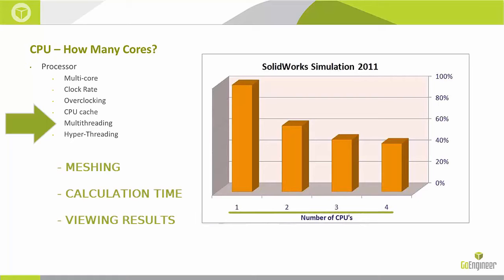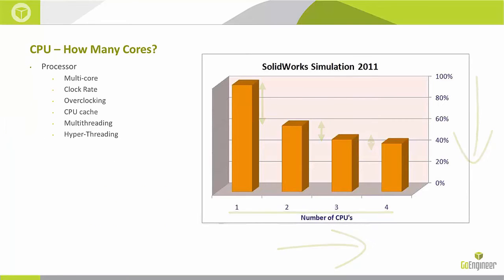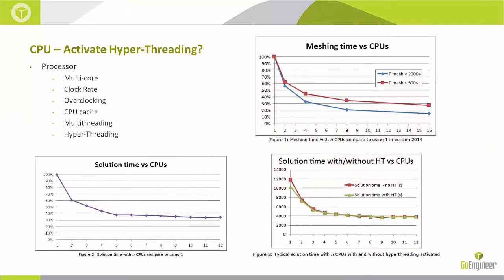This graphic shows us SOLIDWORKS time in an FEA study. As we increase the number of cores, we see a decrease in calculation time. However, we see diminishing returns as we increase the number of cores. This is why most simulation users have 4 to 8 physical cores.